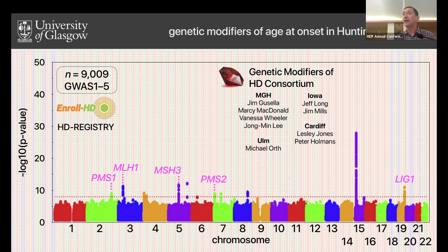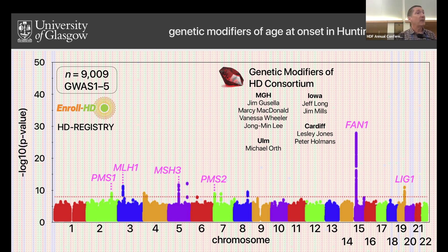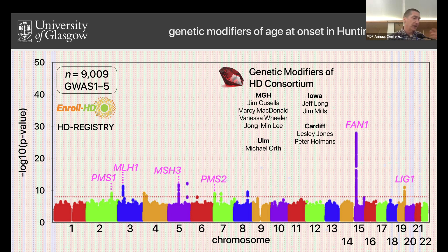This strongly suggested that the process of somatic expansion known about in HD is actually really important in disease onset. Another gene that came up was FAN1, another DNA repair gene. Prior to this observation, it had no known role in the somatic expansion process, but subsequently Karen Usdin, the MGH group, and Sarah Tabrizi's group have shown that this gene also regulates the rate of somatic expansion.